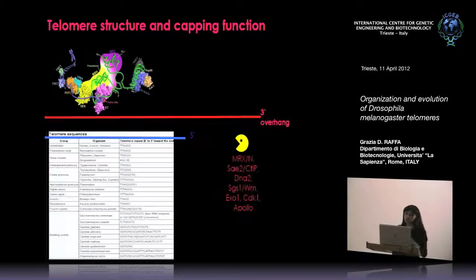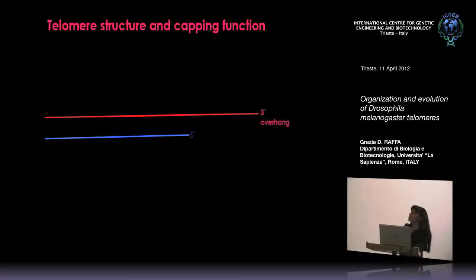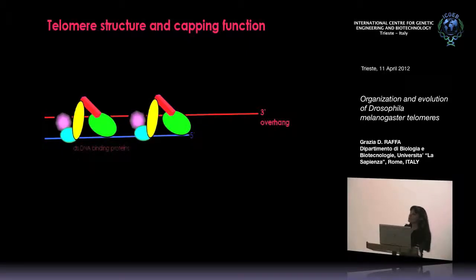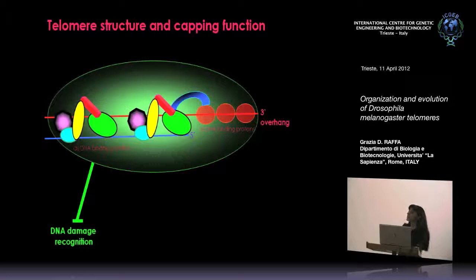After replication, the telomere needs to be processed by a set of enzymatic activities. In the end, it is composed of arrays of telomeric sequences and terminates with a three-prime overhang, which is typically a G-rich filament. The telomeric repeats are recognized and bound by specific double-stranded DNA binding proteins, which help recruit single-stranded DNA binding proteins. In this condition, this is a capped telomere — it is not recognized as a double-strand break, not recognized as damage, and it inhibits the action of DNA repair enzymes.